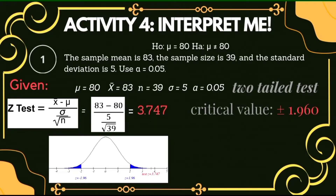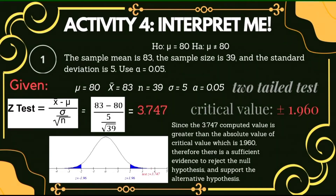Here is our hypothesis test graph. As we can see, the computed value is lying in the rejection region. We can now conclude that since the 3.747 computed value is greater than the absolute value of our critical value, which is 1.960, there is sufficient evidence to reject the null hypothesis and favor the alternative hypothesis.